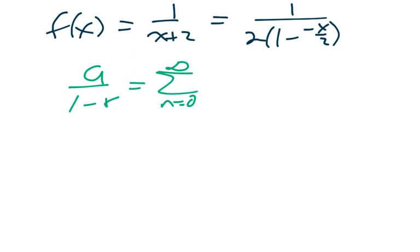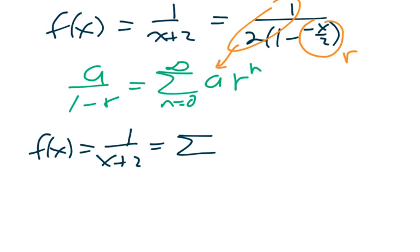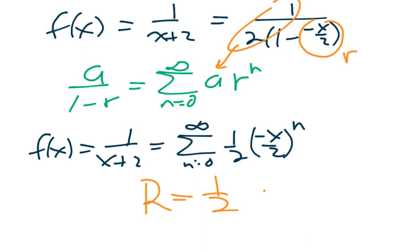And so obviously we'll see that this is our r term, and this is our a term. So we can finally write our function, 1 over x plus 2 is the infinite series, n equals 0 to infinity of 1 half times negative x over 2 to the n power. And it's important to know the radius of convergence on this, and this one we can show pretty quickly has a radius of convergence of 1 half. And the interval of convergence is open at both ends.